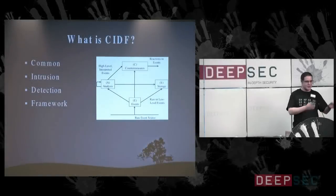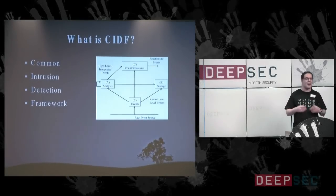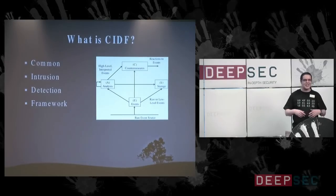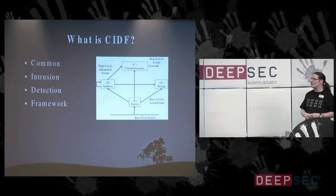The event box passes up to the analysis box, and that's the kind of thought process — that's the pattern matching, or the signature matching, or the statistical anomaly, or all of the cool buzzwords that sell boxes.